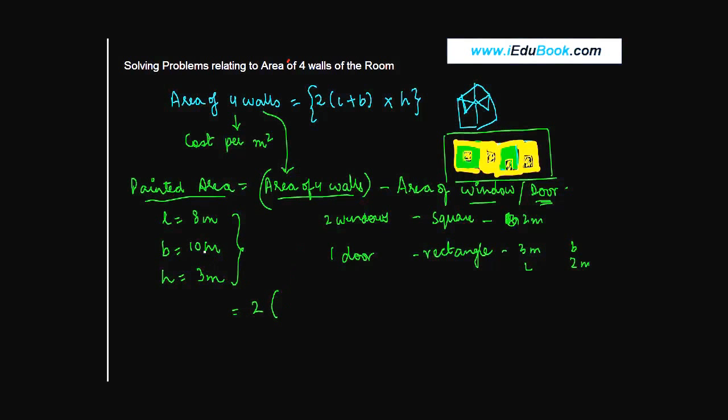2 times (length plus breadth) - length is 8 meters, breadth is 10 meters - into height 3 meters, minus the area of the windows. There are two windows, so you will calculate 2 times the square of the side. Since it's square-shaped, the area is side squared. The side is 2 meters, so 2 squared.